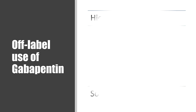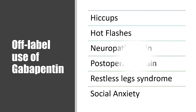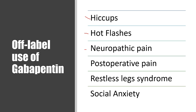Other off-label uses of gabapentin include hiccups, hot flashes, neuropathic pain, post-operative pain, restless leg syndrome, and anxiety. So it's a wide range of uses for this medication.